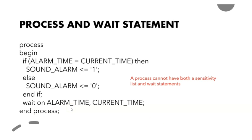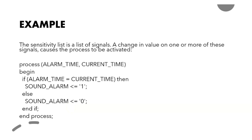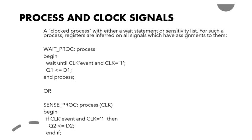These are the two ways of writing a process statement: using the sensitivity list where 'alarm_time' and 'current_time' are placed in brackets, or using the wait statement at the end. You cannot use both. This ends the process with wait statement. Next, let us discuss process and clock signals — a clock process can use either a wait statement or a sensitivity list.